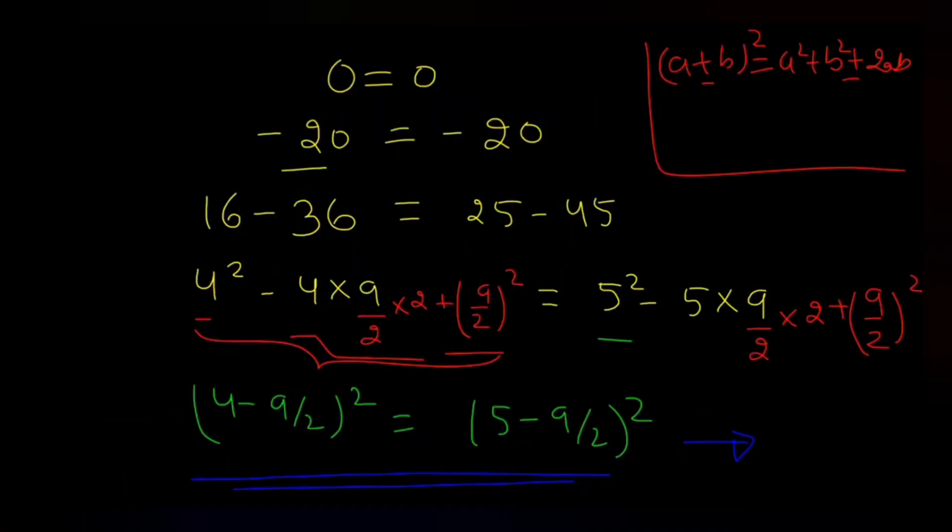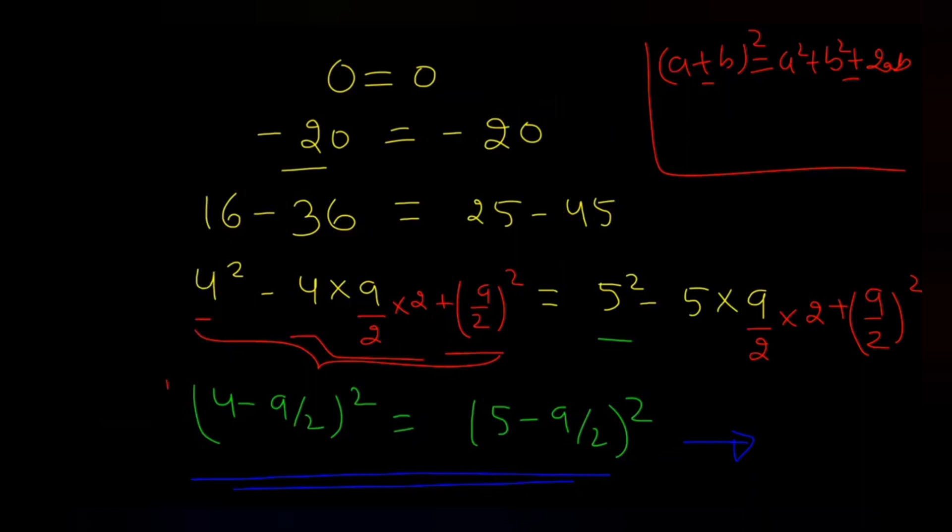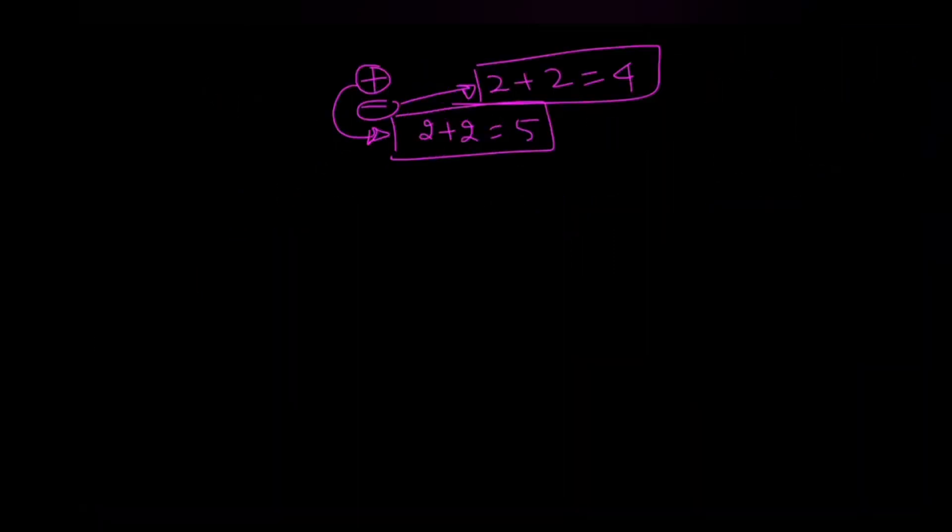See this, this term, if I take this as my variable x, then this is like x squared is equal to something constant, let's say a. I am taking the whole square term as a. This is a second degree equation. And we know the roots of a second degree equation are given as x is equal to minus b plus minus root of b squared minus 4ac by 2a.